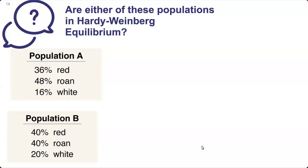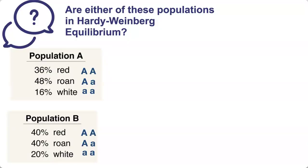This video shows you how to tell if a population is in Hardy-Weinberg equilibrium. We have two populations here. Red, roan, and white refer to colour of cattle — red is homozygous dominant, roan is heterozygous, and white is homozygous recessive. I'm going to label the genotypes here because we'll be working with them in our equations. The first step is to use the allele counting method to identify the frequency of the alleles.